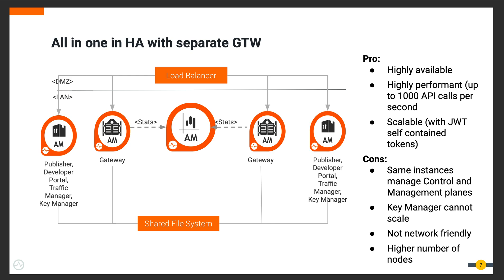A possible evolution of Pattern 1 consists of separating the gateways from the rest of the components. The gateway is separated out from the all-in-one API Manager. In addition to the same level of availability and performance as Pattern 1, this model is more scalable — in case of an increase in traffic, you can simply add more gateways. This is particularly true when self-contained access tokens are used for authentication and authorization, meaning the gateways have no dependency on the key manager at runtime, as the token is verified within the gateway itself.